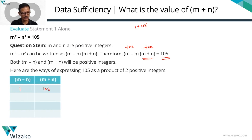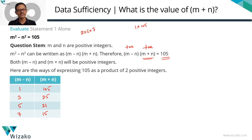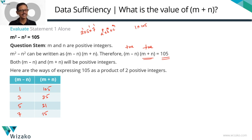The smaller number will be m minus n and the larger will be m plus n. Starting with 1 times 105, then 3 times 35, then 5 times 21, then 7 times 15. We can verify using prime factorization: 105 = 3 × 5 × 7. The number of factors is (1+1)(1+1)(1+1) = 8 factors, giving us 4 factor pairs. So m plus n can take 4 different values: 105, 35, 21, or 15.